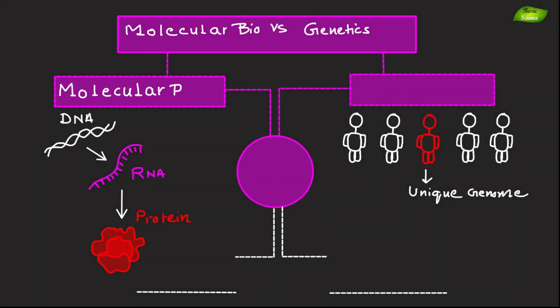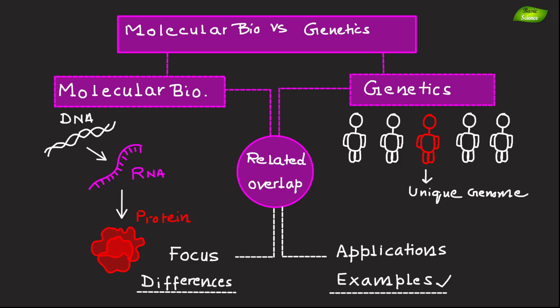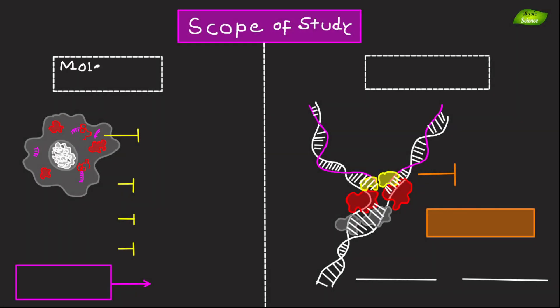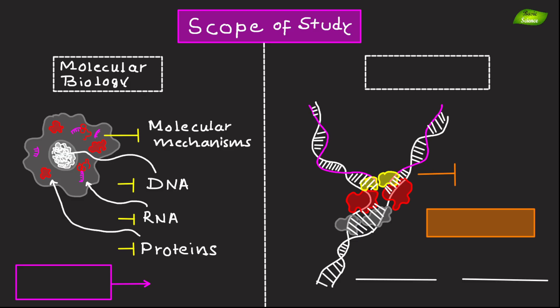Molecular biology and genetics are closely related fields that often overlap but have distinct areas of focus and applications. Here are a few key differences between these two, along with their examples. Molecular biology focuses on the molecular mechanisms within the cells, particularly involving nucleic acids, which is DNA and RNA, and proteins. It aims to understand how these molecules interact.